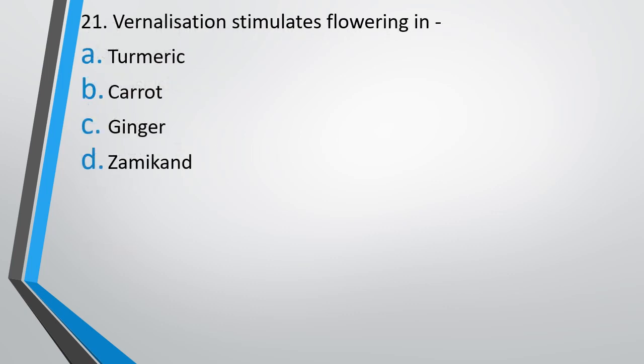Question number 21. Vernalization stimulates flowering in: turmeric, carrot, ginger, or zamikand? The correct answer is option B — carrot.